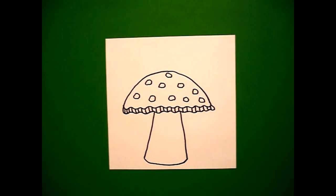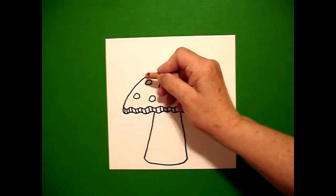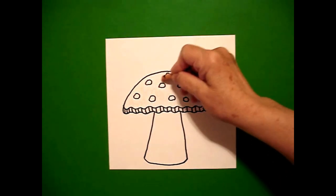Okay, now we're ready to color. This is super easy to color. The first thing I'm going to do is take a peach or an apricot or even a light brown and